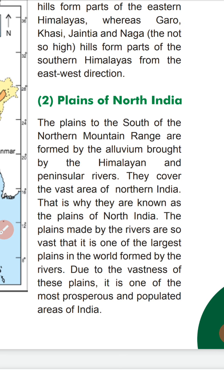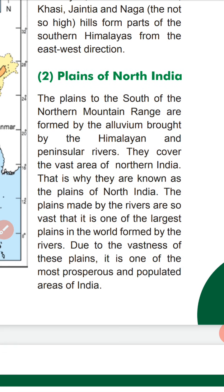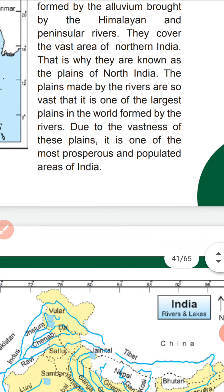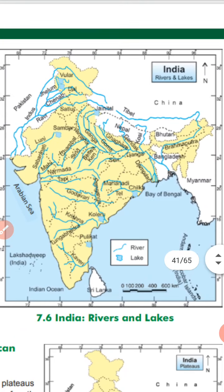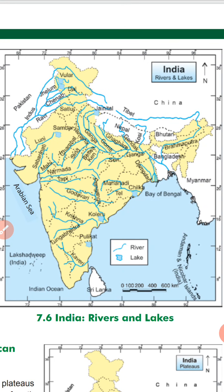These plains are made up of rivers — there are many rivers here forming the largest plains in the world. Due to the vastness of these plains, it is one of the most prosperous and populated areas of India. You can see India's rivers and lakes in this picture — India has many rivers and lakes.